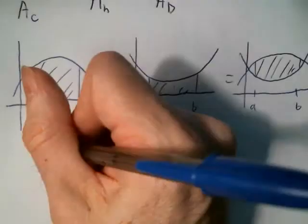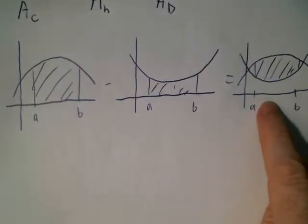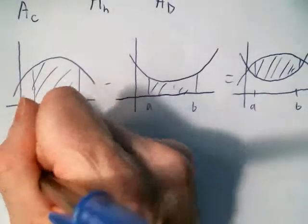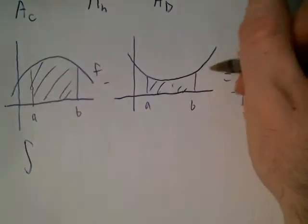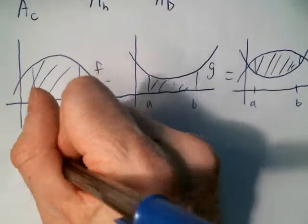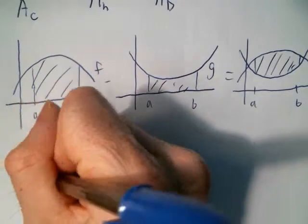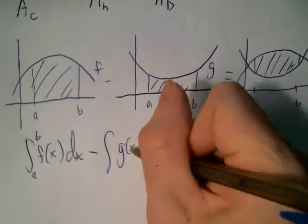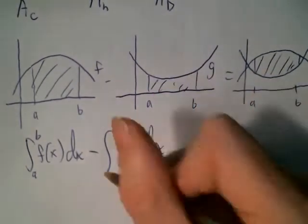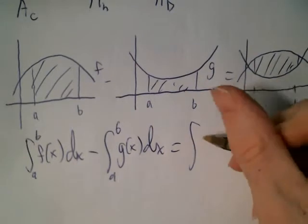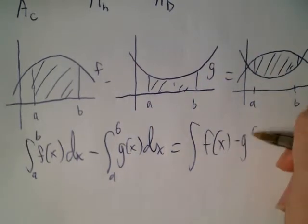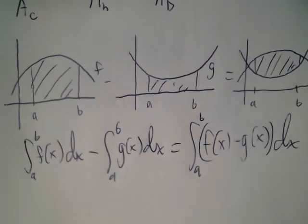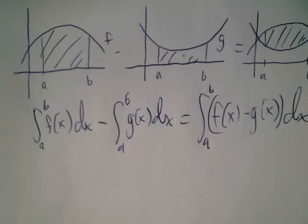Written symbolically, let's call one function F and this one G. The integral of the area under F from A to B, minus the area under G from A to B, equals the integral of F of X minus G of X dx from A to B. That's the main picture from this section.